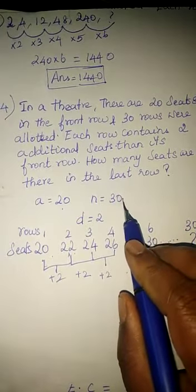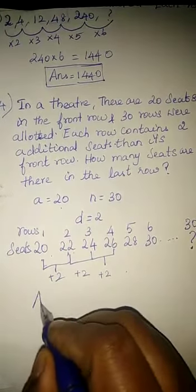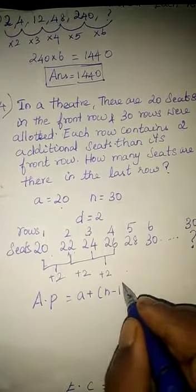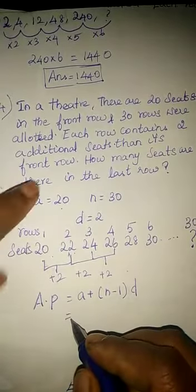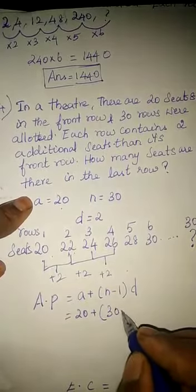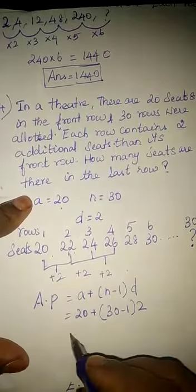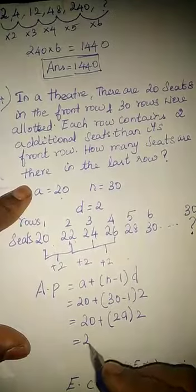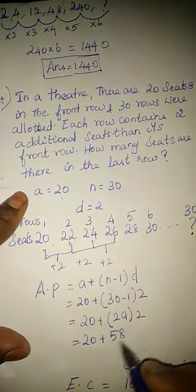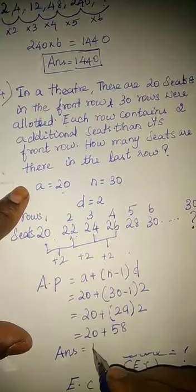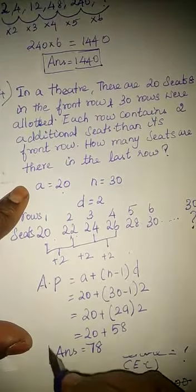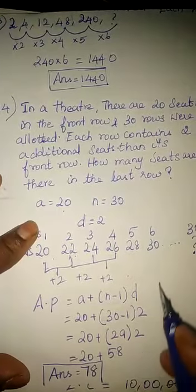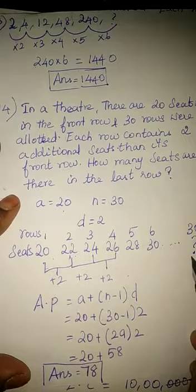And the arithmetic progression formula is a plus n minus 1 into d. So a is 20 plus n is 30 minus 1 into d is 2. Therefore 20 plus 29 into 2, 20 plus 58, answer is 78. Therefore the number of seats in the 30th row is 78.